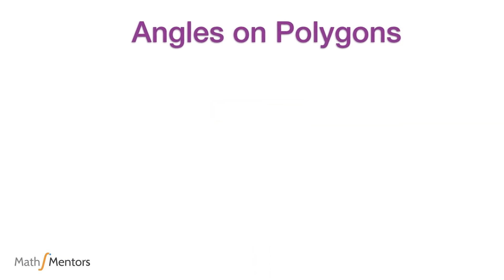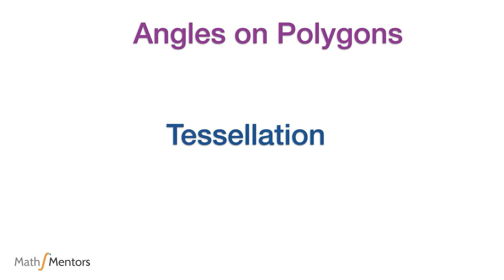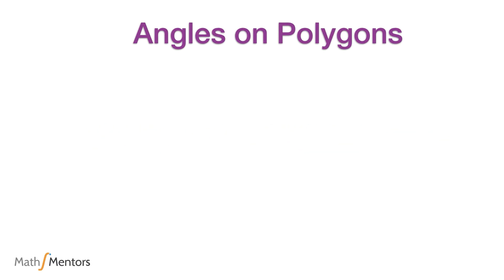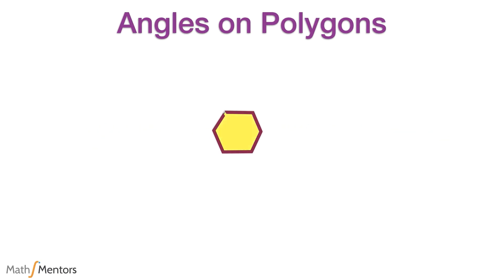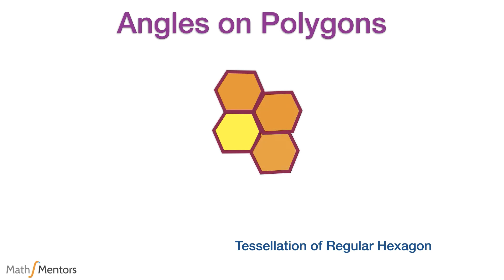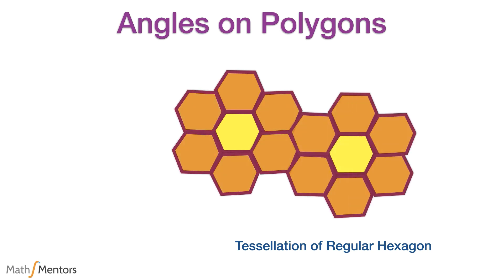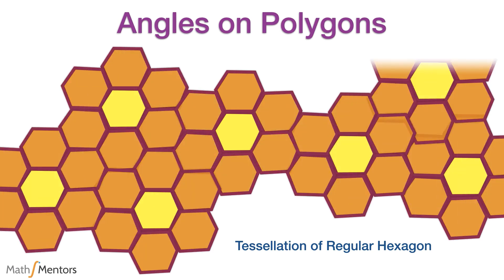Regular polygons give rise to beautiful patterns when they tessellate. Tessellation simply refers to repeating patterns of polygons without gaps or overlaps. For example, when you tessellate regular hexagons it gives the beautiful pattern of honeycombs. Have a go and tessellate different types of polygons to see what beautiful patterns you can generate.